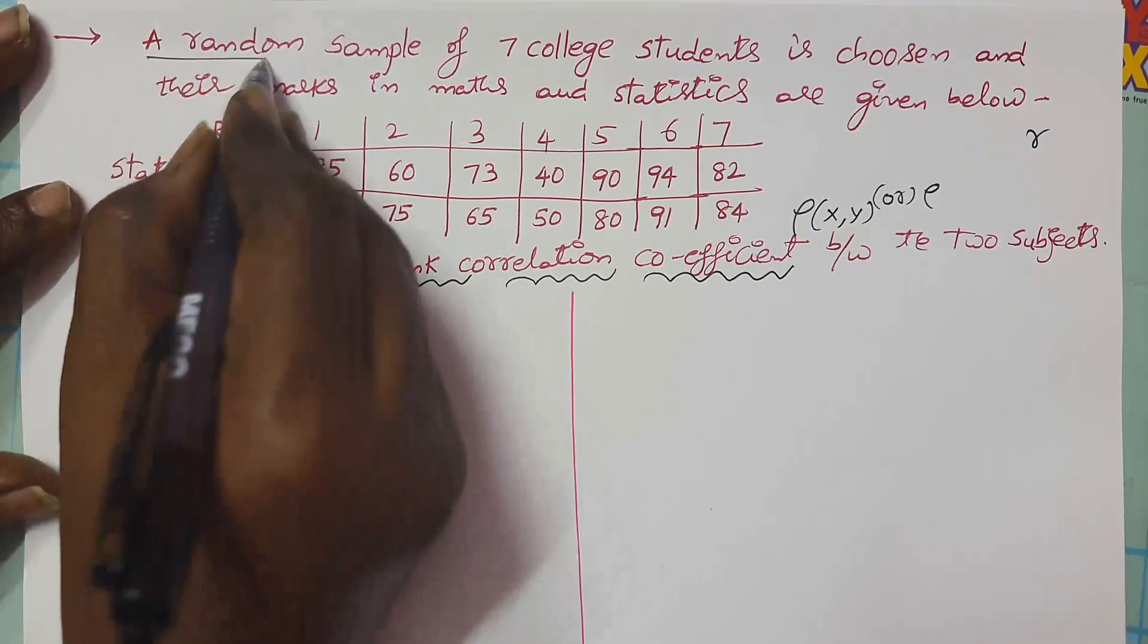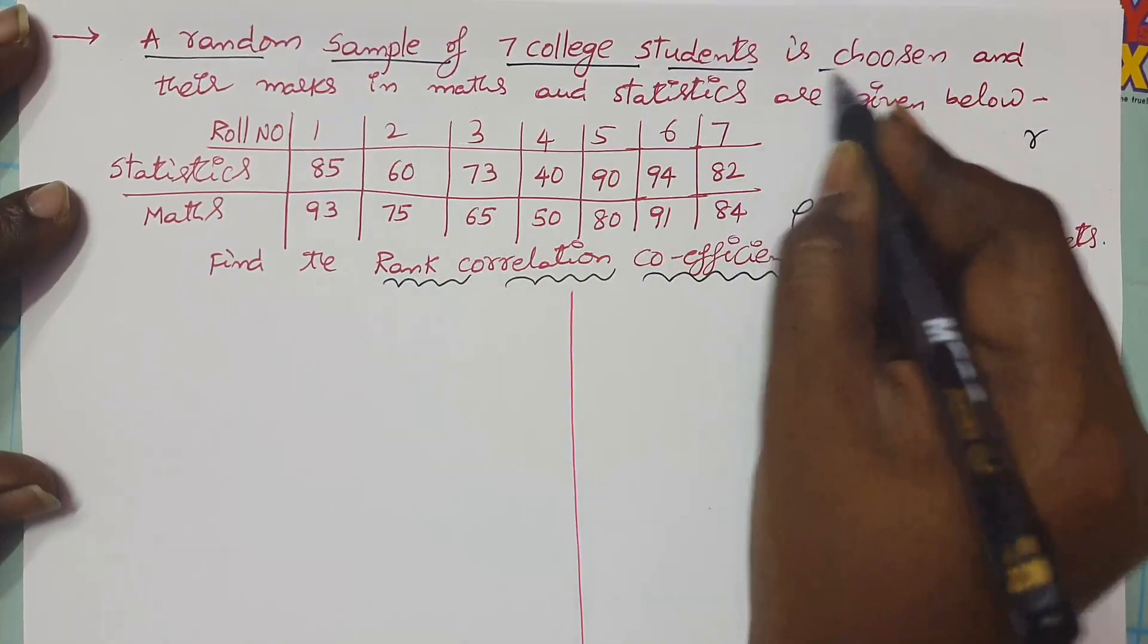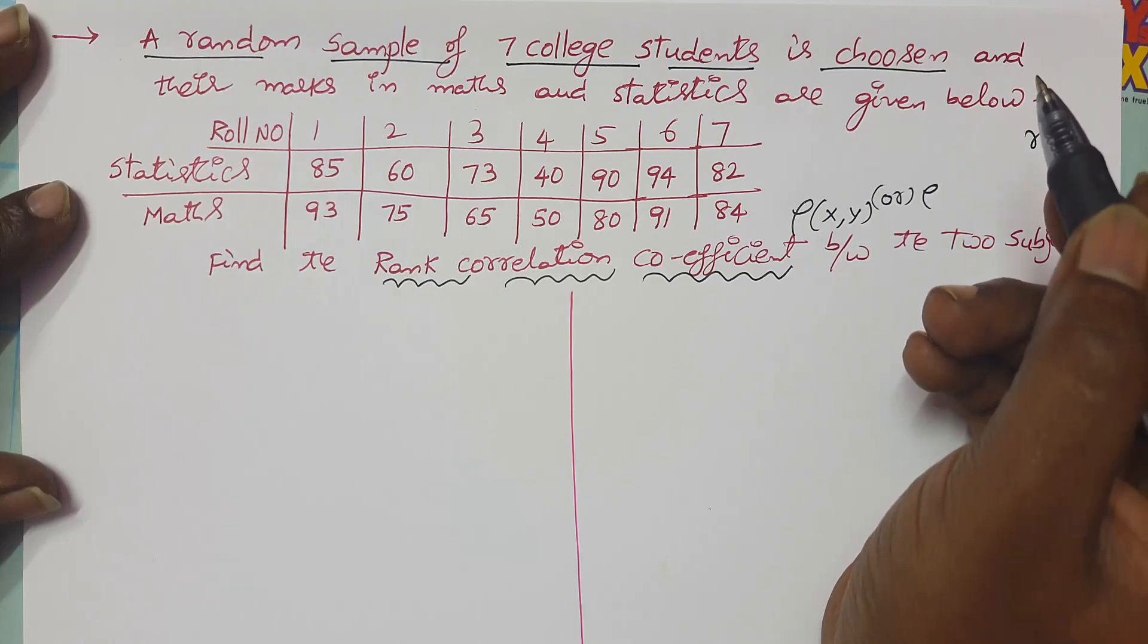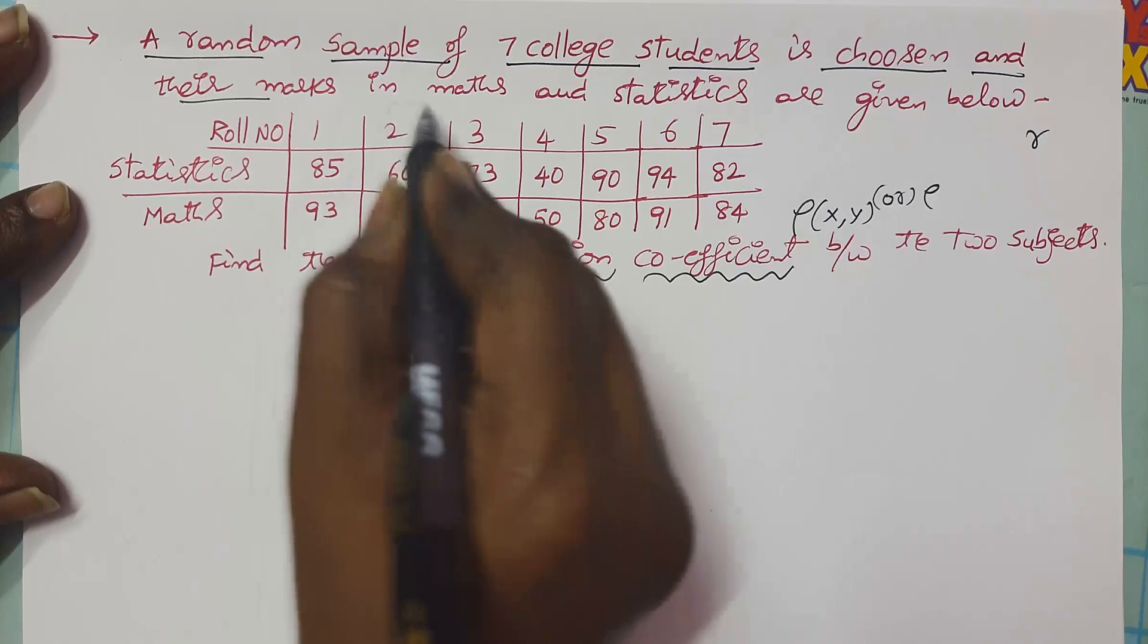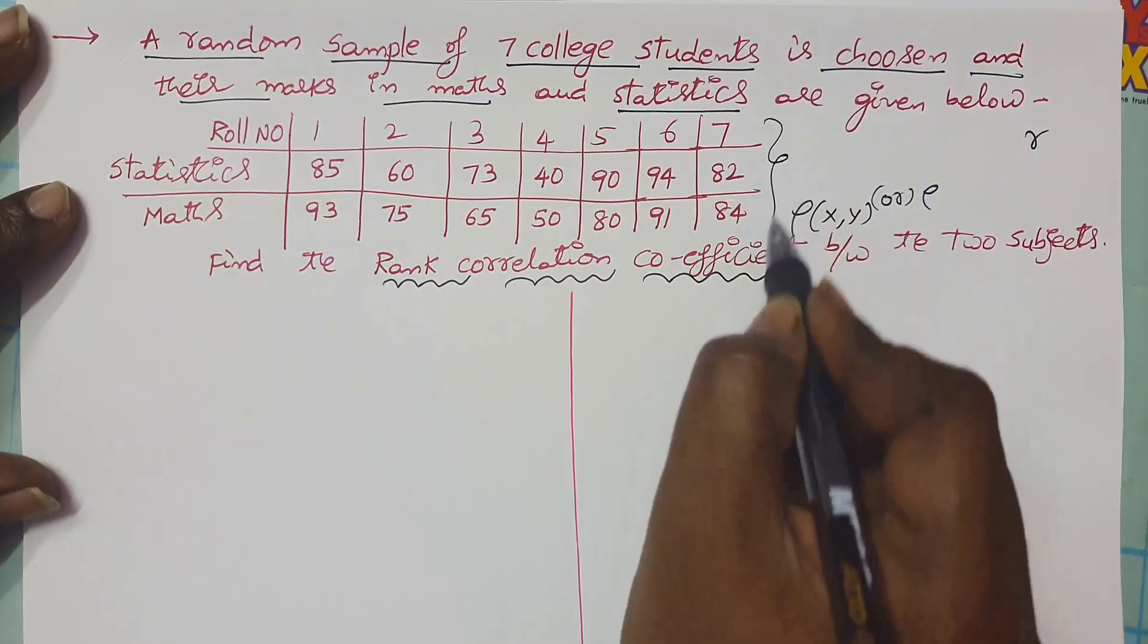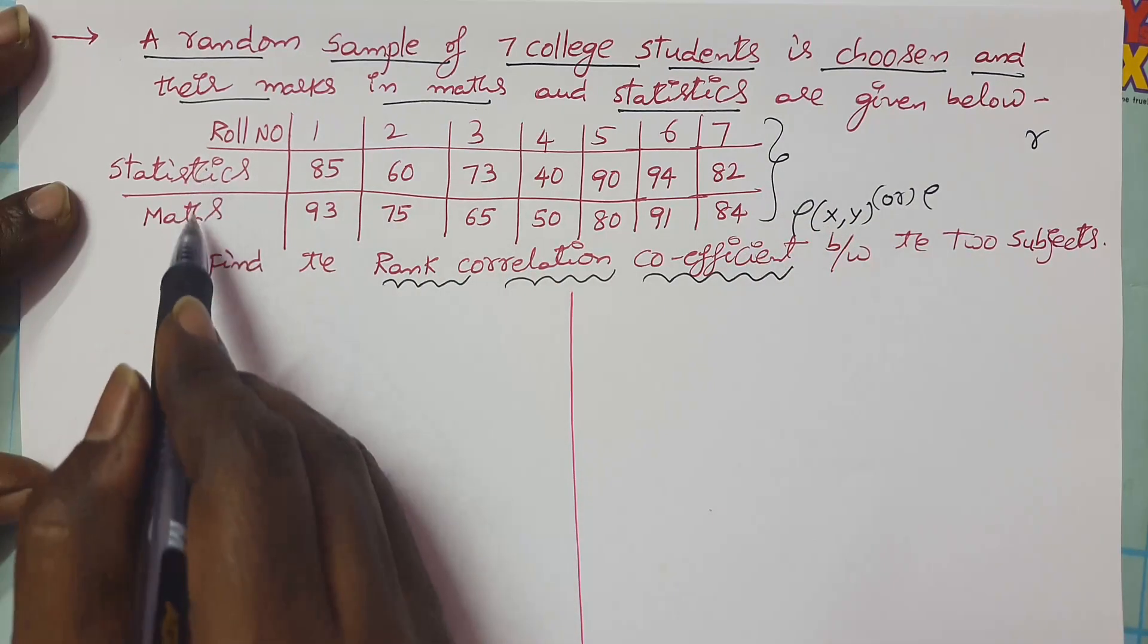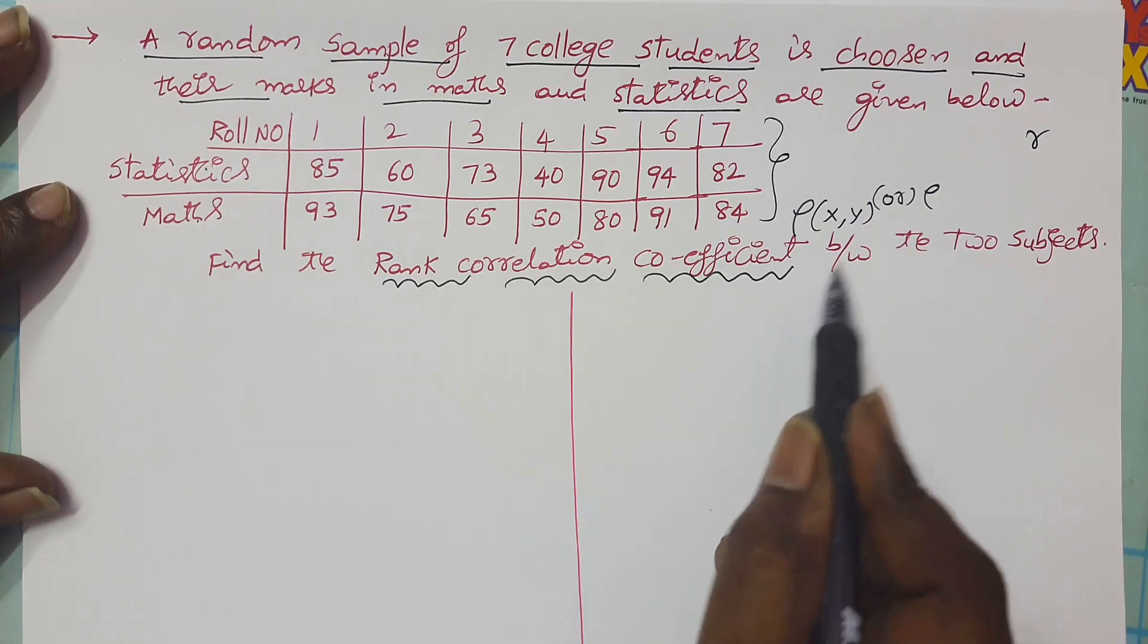We have to find rho for the given data. See the statement: a random sample of seven college students is chosen from a college, and their marks in mathematics and statistics are given below. This data represents the marks of seven students in both statistics and maths.